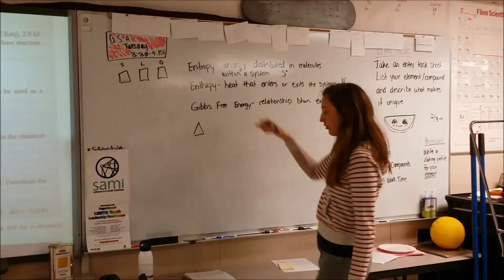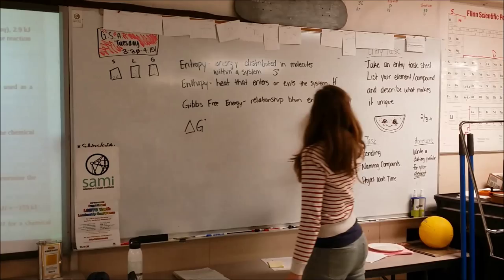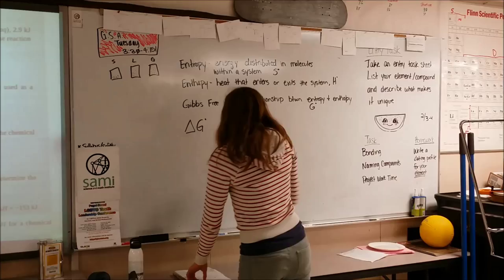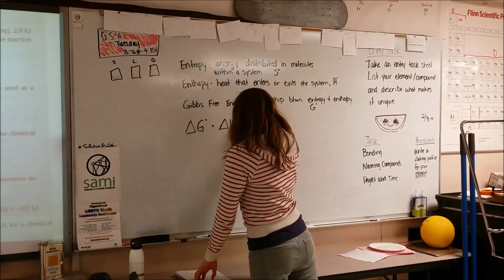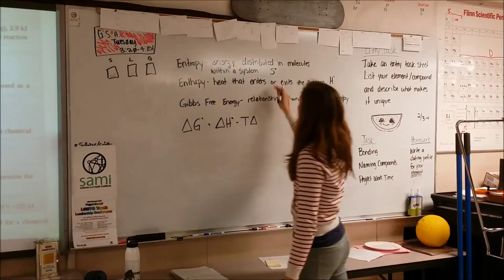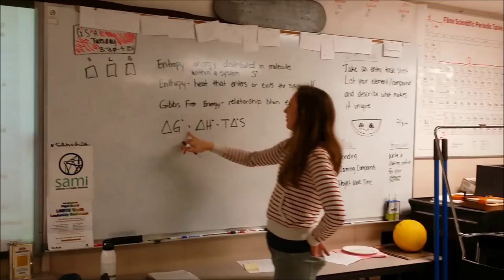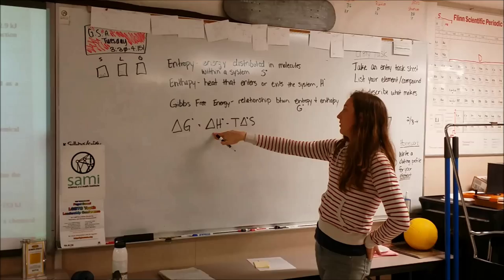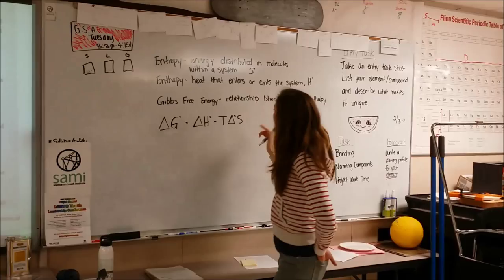We're looking at the change in Gibbs free energy — this is a G with a circle. The equation is: the change in G equals the change in H, which is our enthalpy, minus temperature times the change in entropy. So the change in Gibbs is based on the enthalpy — the change in heat that enters or leaves the system — minus the temperature at which this took place times the change in the energy already in the system.